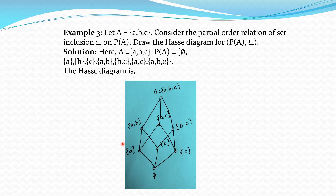Similarly, {b} ⊆ {a,b} directly, and {b} ⊆ {b,c} directly, and the same for {c}. Then {a,b} ⊆ {a,b,c} and there is no set X such that {a,b} ⊆ X ⊆ {a,b,c}, so this relationship is direct. As {a} ⊆ {a,b} and {a,b} ⊆ {a,b,c} by transitivity, {a} ⊆ {a,b,c}. In this way we can complete the diagram.